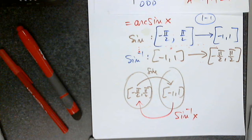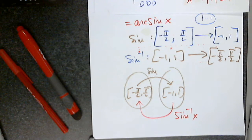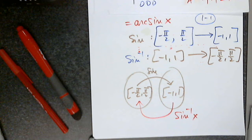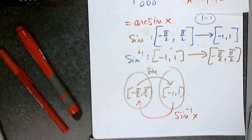Let's say it one more time. Sign is applied to an angle, and the output is a number between negative 1 and 1. The inverse function is applied to a number between negative 1 and 1, and it will give us back an angle. Sign inverse is applied to a number between negative 1 and 1, and it will give us an output that is an angle.